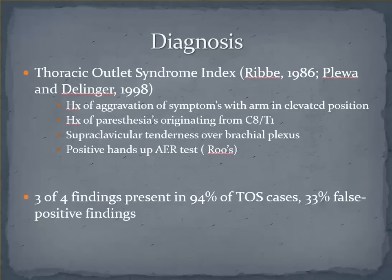Way back in 1986, Rib and colleagues investigated 315 individuals with cervicobrachial symptoms and attempted to find the most reliable means to detect TOS. The factors seen on this slide were termed the TOS index, and three of four findings were thought to be indicative of TOS, occurring in 94% of that population from their investigations. Unfortunately, there is a fairly high false positive rate.